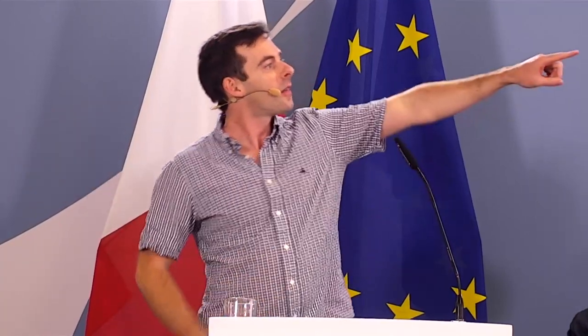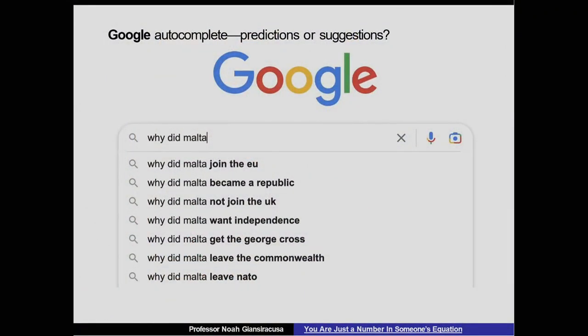Meaning, among all the, based on your personal data, based on what other people around the world are searching, that if someone starts to type why did Malta, that the most likely subsequent words in order are join the EU, become a republic, not join the EU, etc. So this is not saying you should do this search. It's saying based on your personal data and everyone else's search history, these are the most likely searches. Tiny pedantic distinction, and yet, I think it matters.